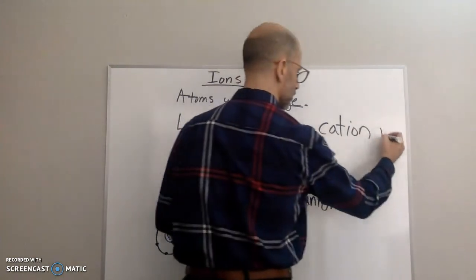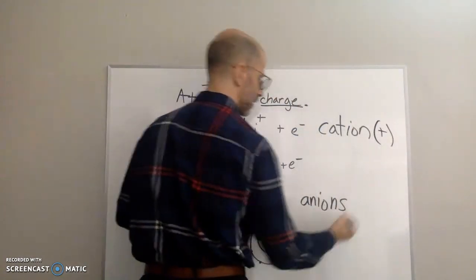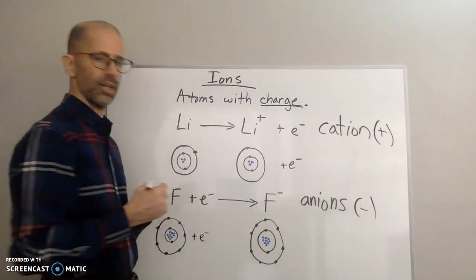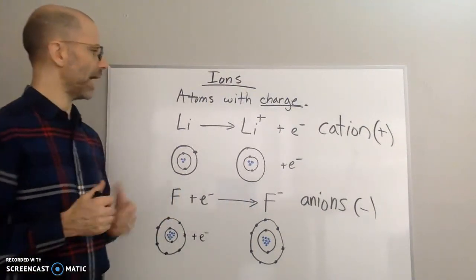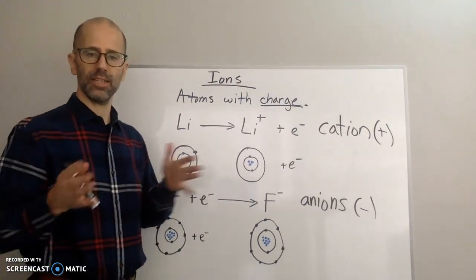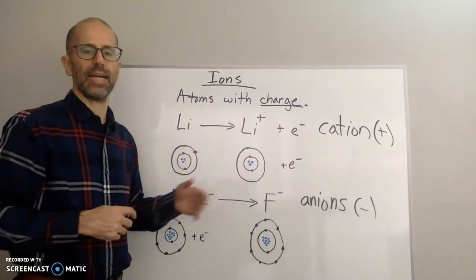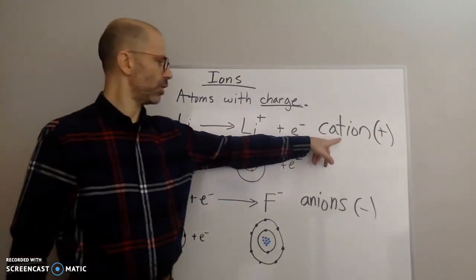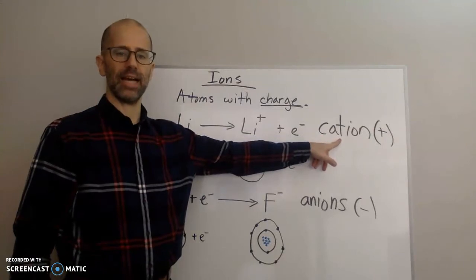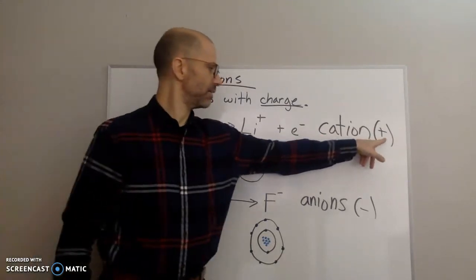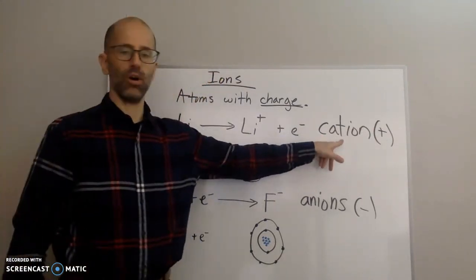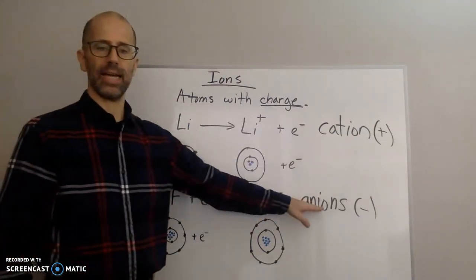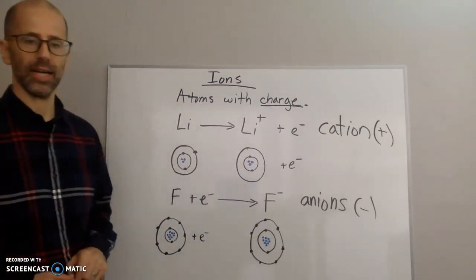So negative ions are anions, and positively charged ions are cations. The way I like to remember the distinction between cation and anion: I always remember the T in cation — T looks like a plus sign. So cation is for positive, and anion is for negative ions.